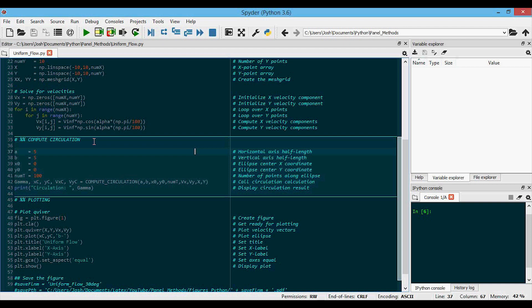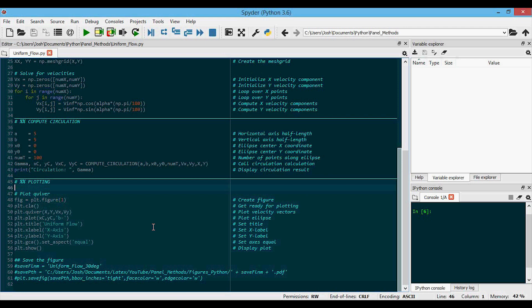This next section here just computes the circulation around a closed curve and prints the value to the console. It's not really relevant in the uniform flow case, but you'll see why it's relevant when we start talking about vortex flow. And finally down here, we create a plot of the velocity vectors at each grid point, also called a quiver plot. And from this command right here, we are also plotting the ellipse or circle that we're computing the circulation around.